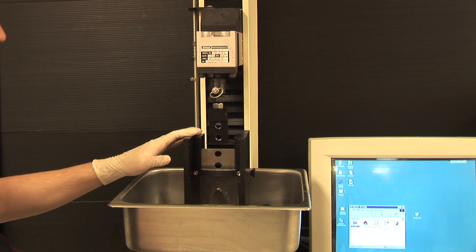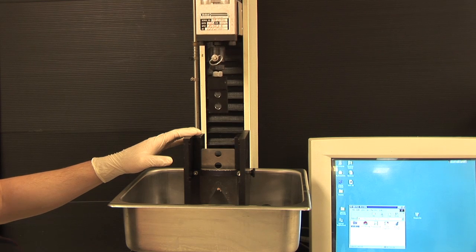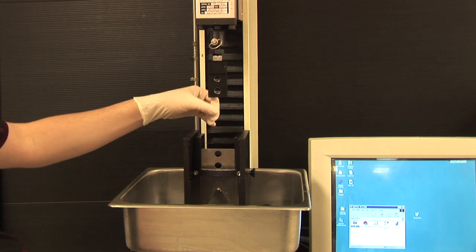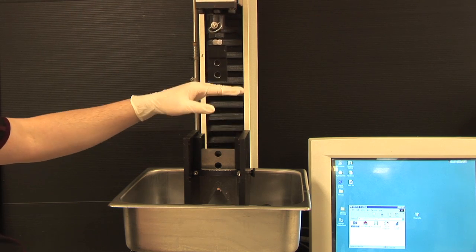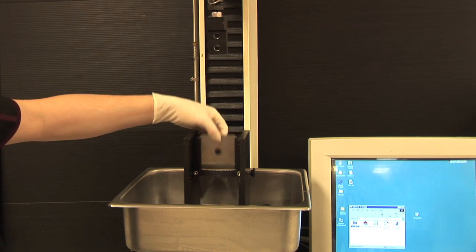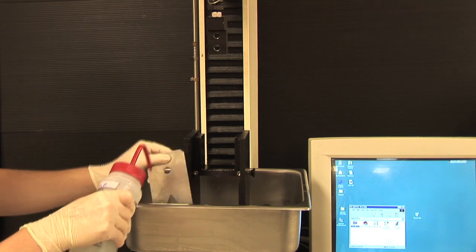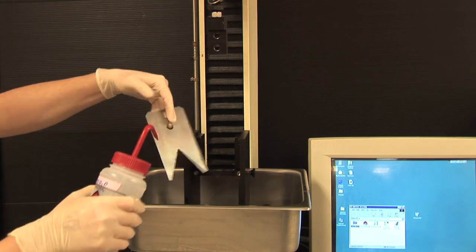But once the blade's off, you can go ahead and fast jog it up. And you want to get it high enough to where you can pull the blade out without bumping into the bottom of the holder. So that's high enough. We're going to pull it out. To clean it, we just use distilled water. Spray it real good on each side.